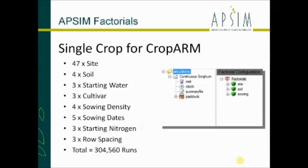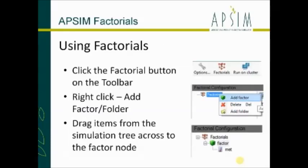With the factorials, we can set up that same number of simulations with a factorial configuration consisting of three nodes. There's a factorial button right up on the toolbar. To add a factor node, you just right-click on the factorial tree that comes up. It's a pretty simple interface - it hasn't had anywhere near as much development as the simulations tree. Then we can just drag items across from the simulation tree and add them onto the factor node.